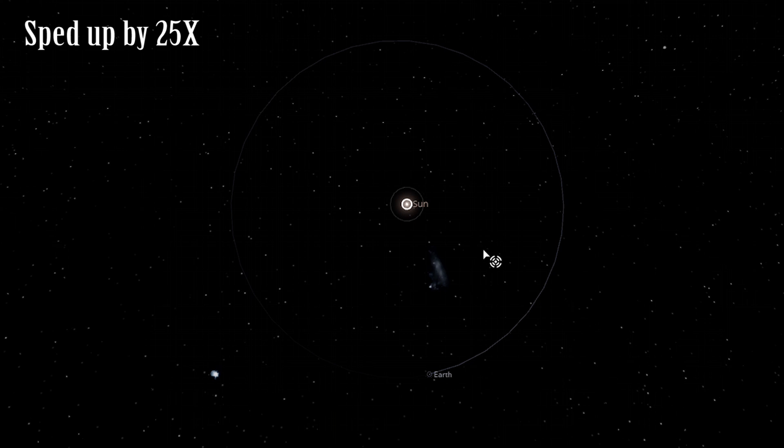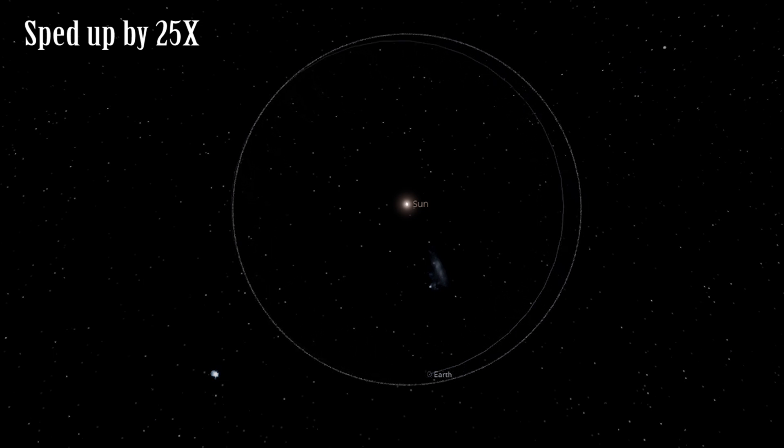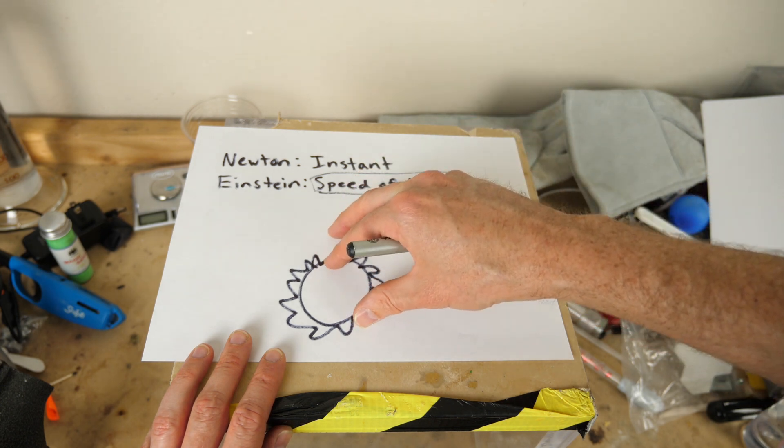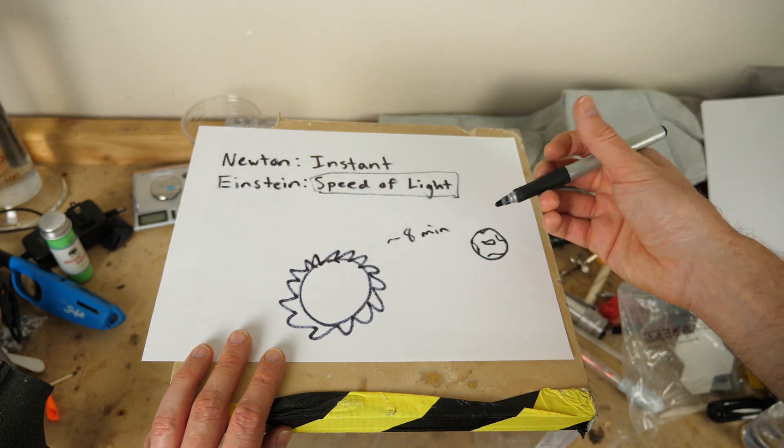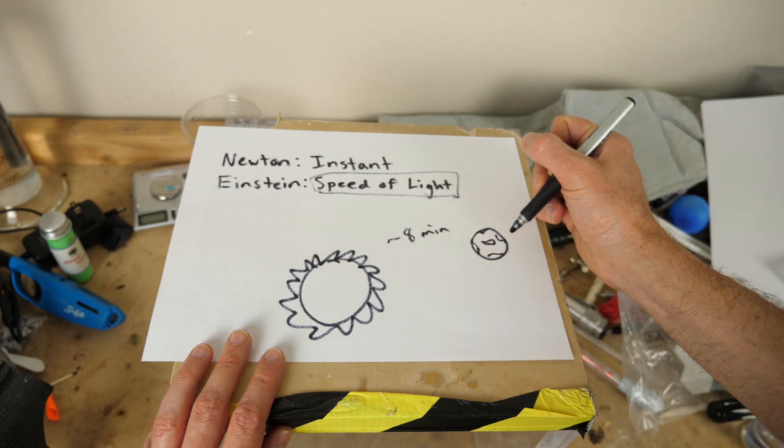Here's a simulation for how long it takes the light from the sun to reach the earth. Even sped up, it takes a long time. So now that we know if the sun were suddenly plucked out of existence in the solar system, it would take around eight minutes to reach the earth.